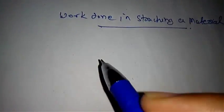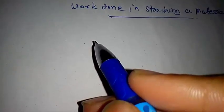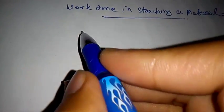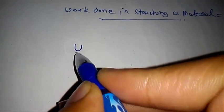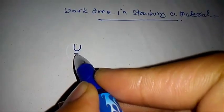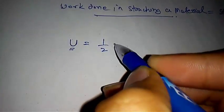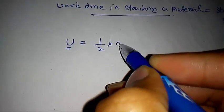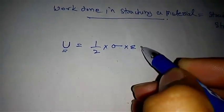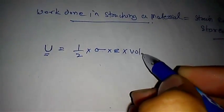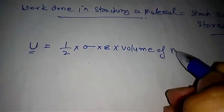As you know, the expression for the strain energy in a material is denoted by U. Strain energy U is equal to one-half times stress in the material times strain in the material times volume of material.